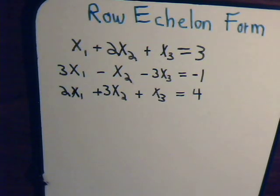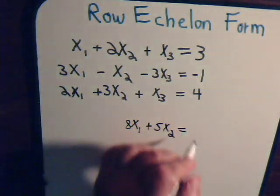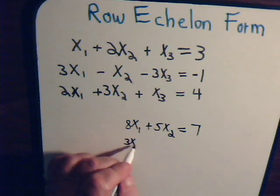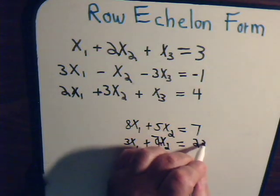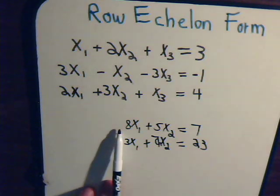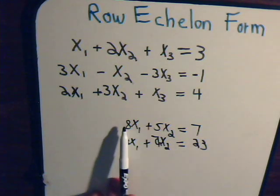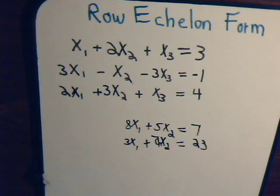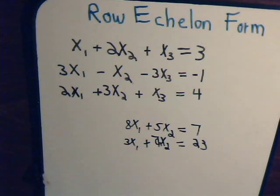If we just had two equations — say 8x1 plus 5x2 equals 7, and 3x1 plus 7x2 equals 23 — we could multiply the top row by minus 3/8 so that when we add, the x1 term becomes 0. Then we only have one variable to work with, and we could work backwards: solve for x2, then work backwards to find x1. With just two equations, it's not too inconvenient to use that method.